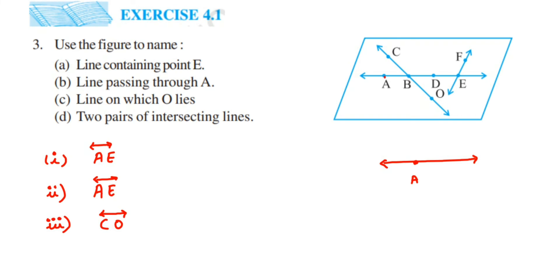The fourth question: they're saying two pairs of intersecting lines. Lines when they cross each other and have one common point, those are called intersecting lines. You can see there is line CO and it has a common point B, and this point is also on line AE. So this line and this line are intersecting at point B. So this will be one pair: line CO and line AE is one pair.